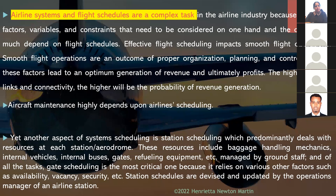Airline systems and flight schedules are a complex task in the airline industry because of several factors, variables, and constraints that need to be considered. Effective flight scheduling impacts smooth flight operations. Smooth flight operations are a result of proper organization, planning, and control — proper organization planning and control certainly precedes smooth, unhindered flight operations.